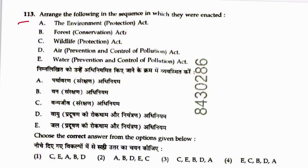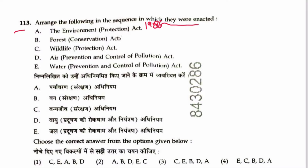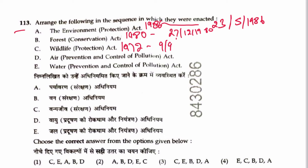Question 113: Arrange the following environmental statutes in sequence of enactment. Water (Prevention and Control of Pollution) Act — 23rd March 1974. Wildlife Protection Act 1972 — notified 9th September 1972. Forest Conservation Act 1980 — 27th December 1980. Air (Prevention and Control of Pollution) Act 1981 — effective 29th March 1981. Environment Protection Act 1986 — effective 23rd May 1986. Sequence accordingly places Wildlife Act first, then Water Act, Forest Act, Air Act, and Environment Protection Act.